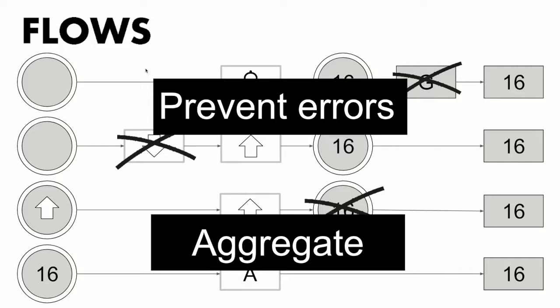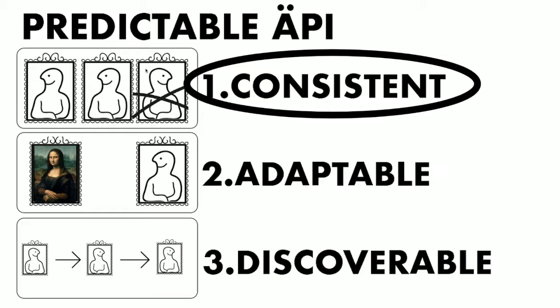API interaction flows can be improved using exactly the same principles: improving feedback and inputs to prevent errors, and minimizing the number of steps by aggregating actions. Designing straightforward APIs is relatively straightforward — you know how to do it. But is there a way to be even more straightforward?